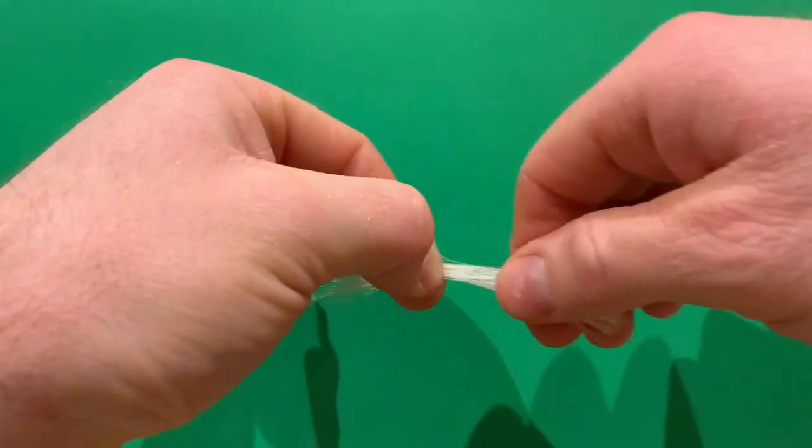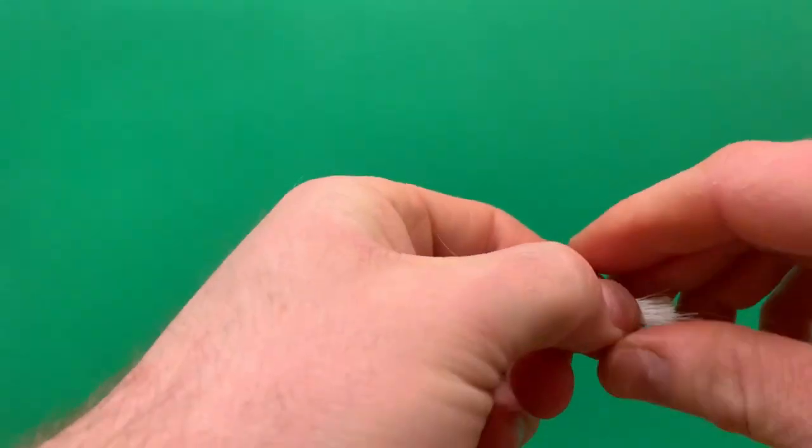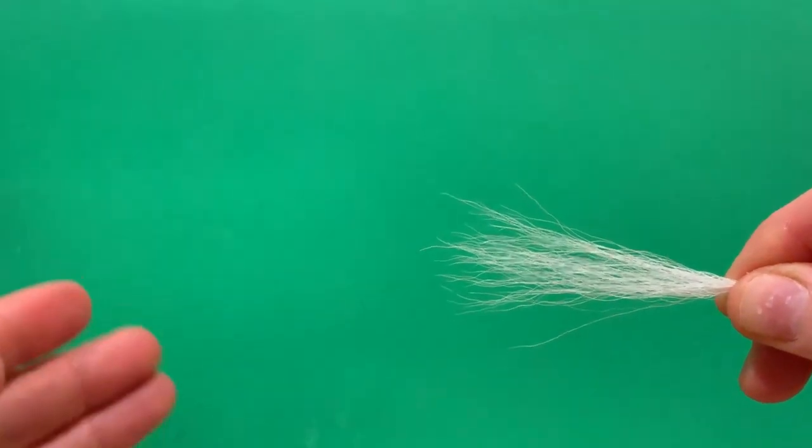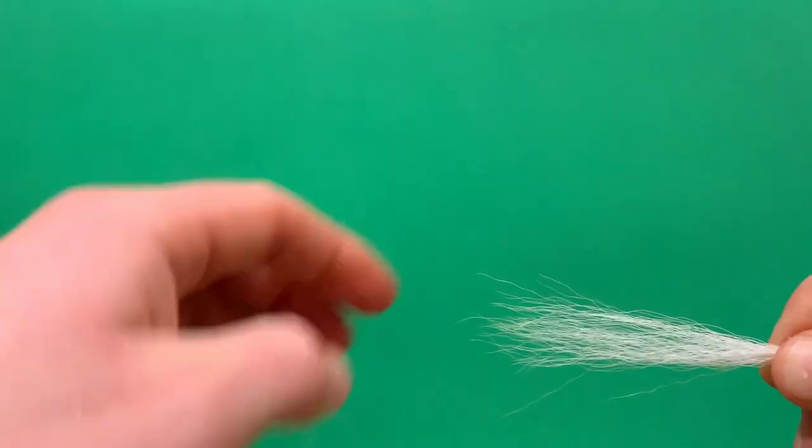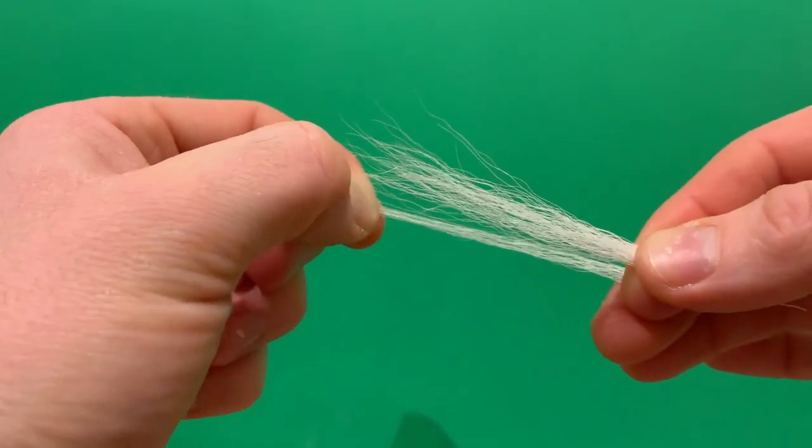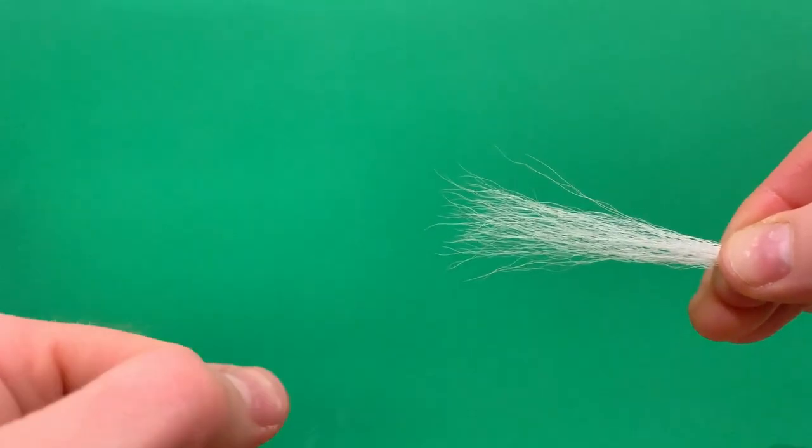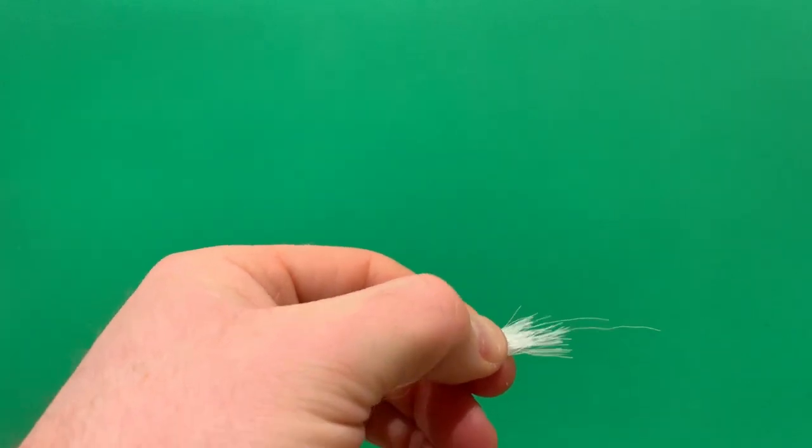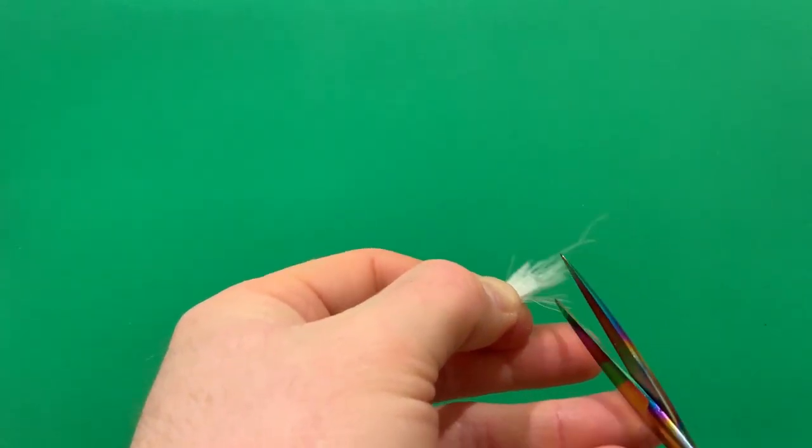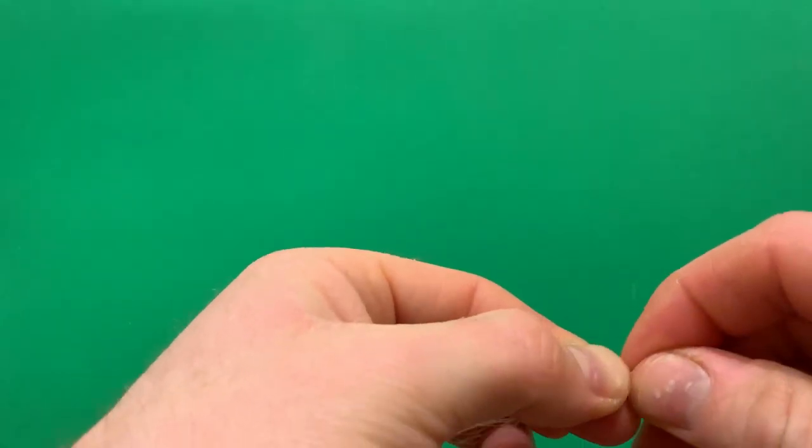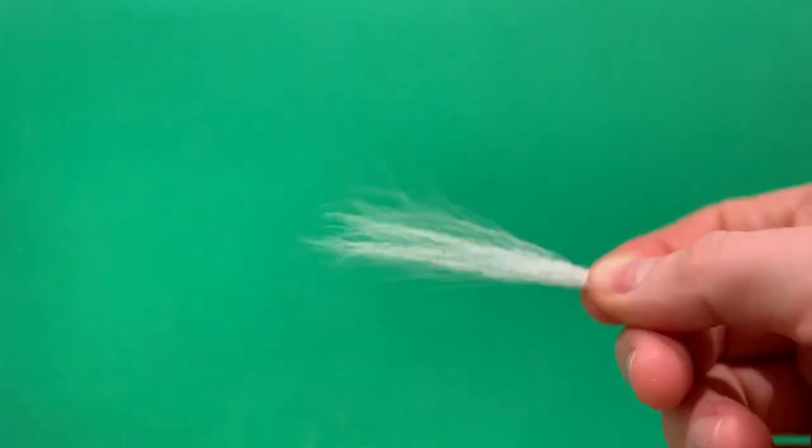At this point, grab the fibers again right down by the base. To stack them and have a more uniform length, just grab the tips, gently tease them out, and line them back in with the other tips. Once you're finished, you can cut and square up all the ends here. That's your clump of bucktail ready to tie in.